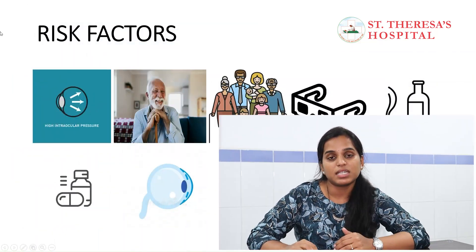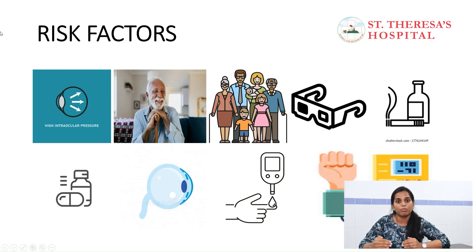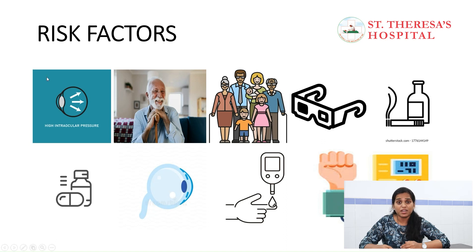Coming to the risk factors — anyone in this world is prone to get glaucoma. But there are some high-risk categories. Firstly, if the baseline pressure is high — there is a 21 cut-off point, so those with 19 to 20 mm of mercury are at risk. Also old age, above 50, and family history.